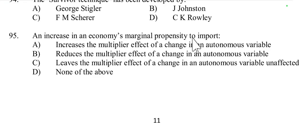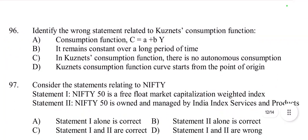Question number 95: An increase in an economy's marginal propensity to import reduces the multiplier effect on a change in autonomous variables. Option B is correct because when the marginal propensity to import increases, a larger proportion of additional income is spent on imports rather than domestic goods and services, reducing the overall impact of an initial change in autonomous spending on total economic output.